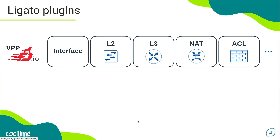Of course, this is not an exhaustive list. There are other VPP plugins available, like ABF, IPFIX, IPsec, Segment Routing, and WireGuard.